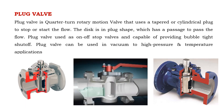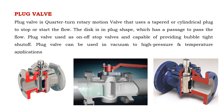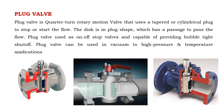Plug valve is a quarter-turn rotary motion valve that uses a tapered or cylindrical plug to stop or start the flow. The disc is in plug shape, which has a passage to pass the flow. Plug valve is used as on-off stop valve and is capable of providing bubble-tight shut off. Plug valve can be used in vacuum to high pressure and temperature applications.